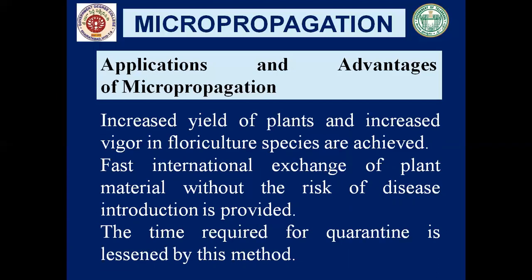Fast international exchange of plant material without the risk of disease introduction is provided. When a plant has to be taken from one country to another, a quarantine check is required. If any plant has a disease, it is not allowed into that country. To avoid this, micropropagation can be used — instead of taking the whole plant, we can take the germplasm or callus, which is free of microorganisms and diseases, and develop it in the destination country.